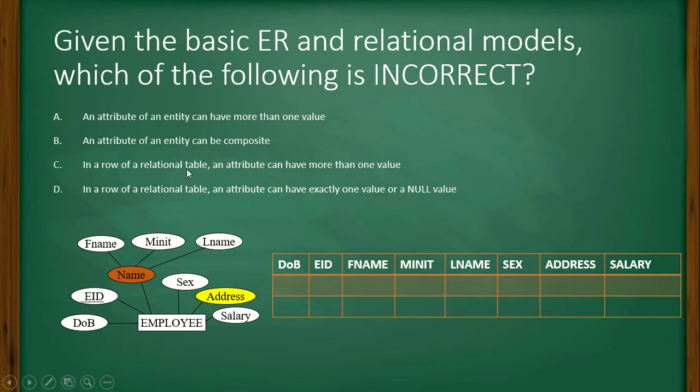In a row of a relational table, an attribute can have more than one value. That means in this cell. Is it possible to store more than one value? Can we store more than one first name of a person?